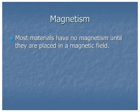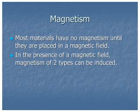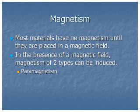Most materials don't display magnetism unless they're placed in a magnetic field. When you do place them into a magnetic field, there are two types of magnetism that you can observe or induce by placing it in the magnetic field. We can talk about paramagnetism, and we can talk about diamagnetism.